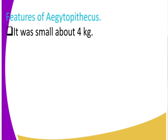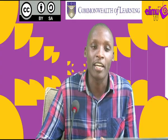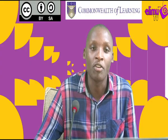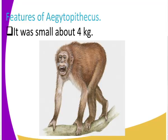Now let us look at the characteristics of Aegipithecus. It was small, weighing about four kilograms. You can see how the Aegipithecus looks — it was small, approximately four kilograms in weight.